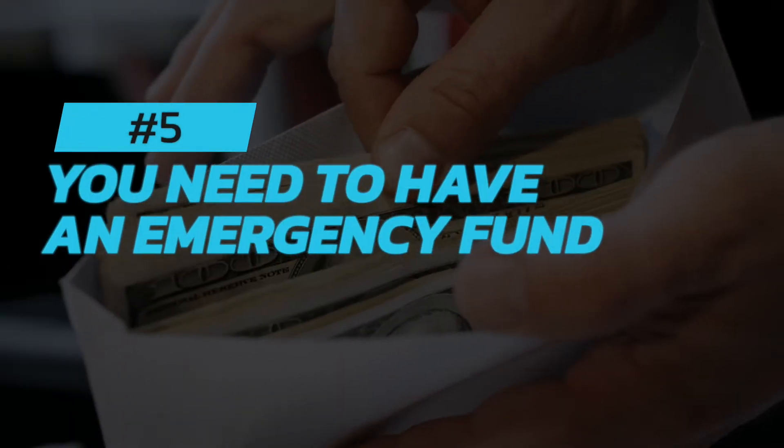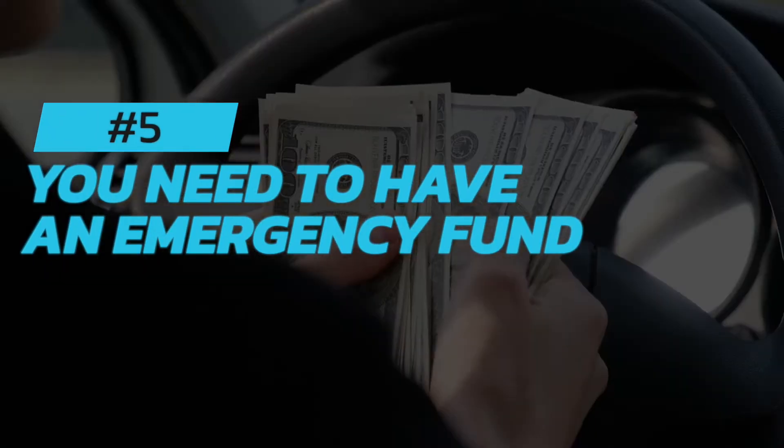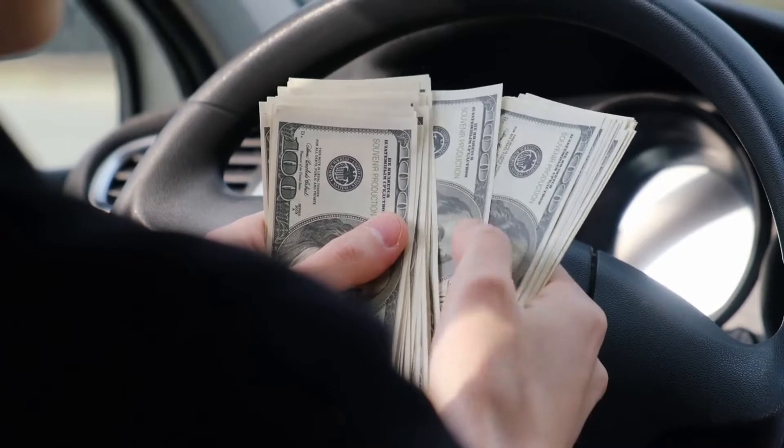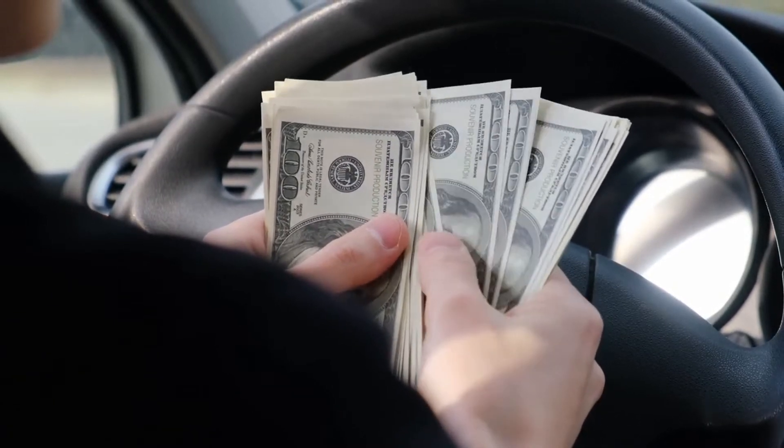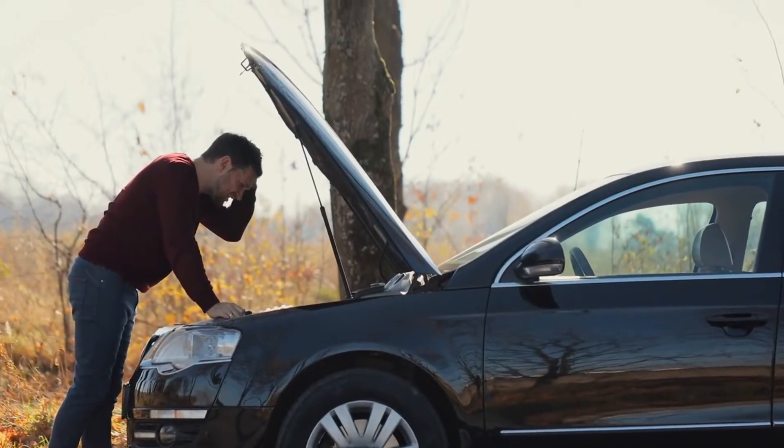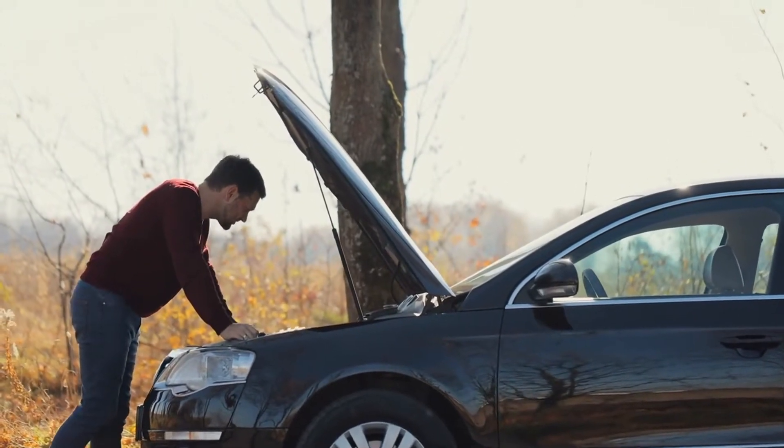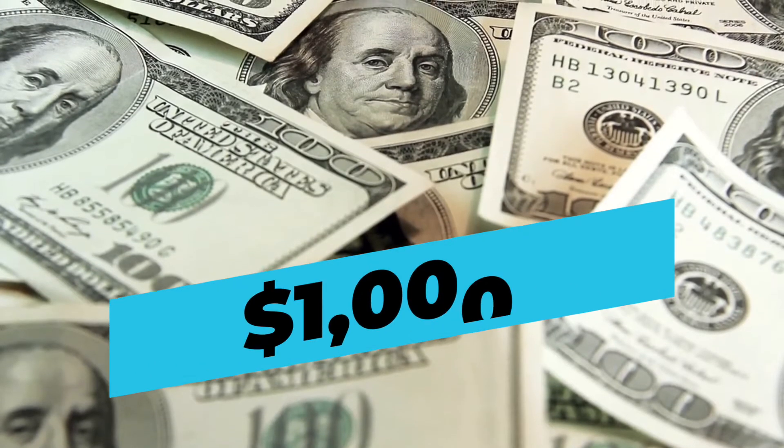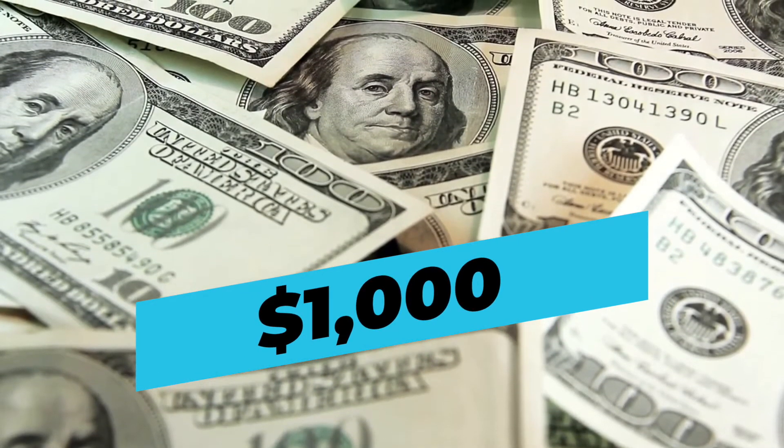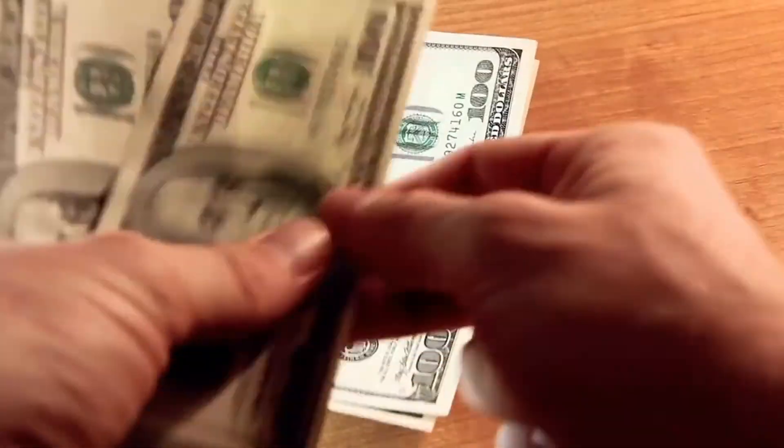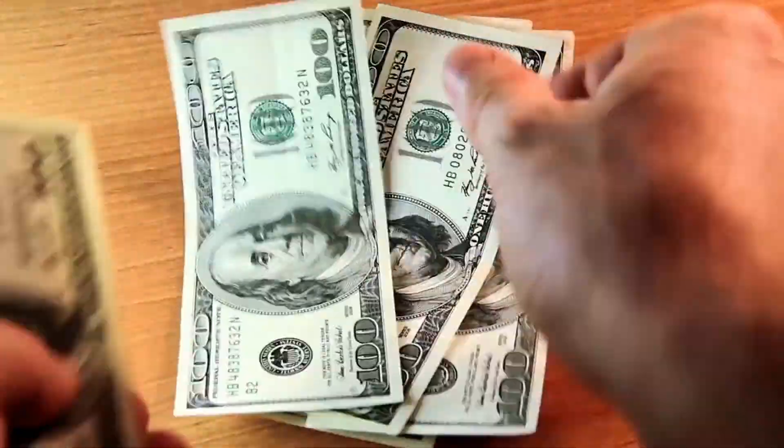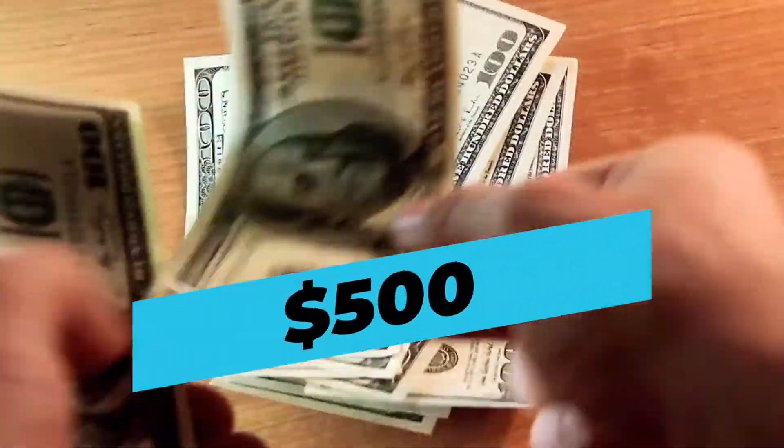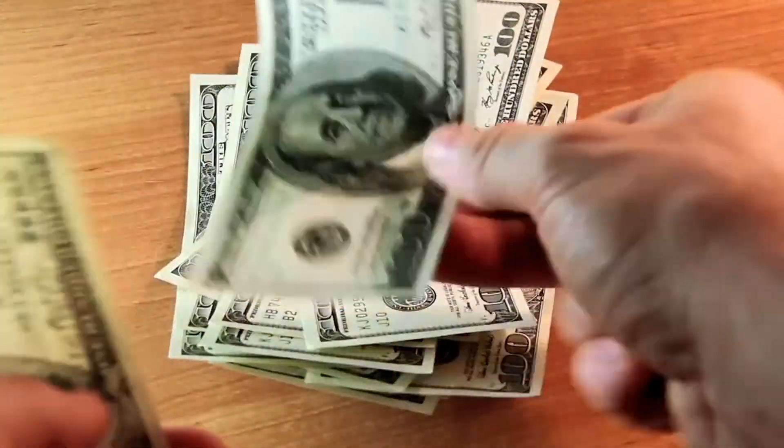Number five: You need to have an emergency fund. An emergency fund is a savings account that you use for unexpected expenses. It helps you avoid going into debt if something unexpected comes up. We recommend having at least $1,000 in your emergency fund, but more is even better. If you can't seem to save anything, start with $500 and gradually increase the amount you're saving each month.